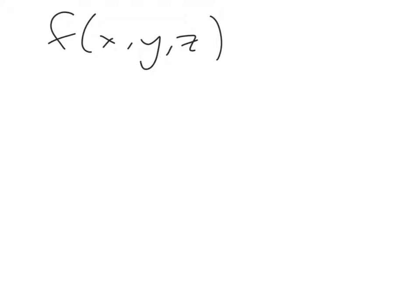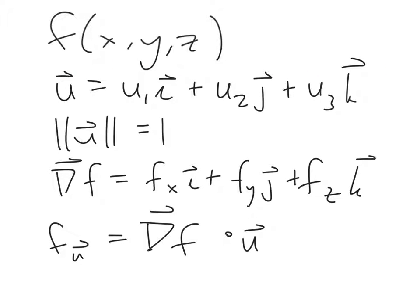We've just looked at a context of functions of two variables, but now let's think about the context of functions of three variables. Our definitions go through very similarly — we have a direction vector with a magnitude of 1 and three components. We have a gradient vector with the same two components as before, plus a third component describing how the function changes when z changes. A directional derivative for this function is still a dot product of the gradient with three components and the direction vector with three components.